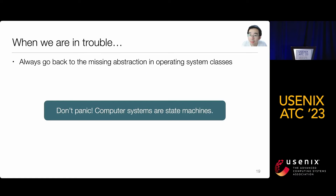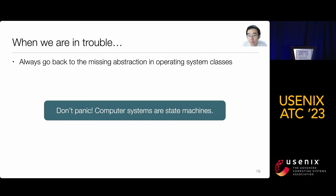I hope I've convinced you a bit that state machines are useful in teaching operating systems. We have other examples, like state transitions that don't always have to trap to the kernel — we can actually have system calls that don't require traps, thereby avoiding context switching. If our class has only one takeaway message for students, it will be: when you are in trouble, don't panic. Computer systems are simply state machines, so just do what you need to do to understand them.